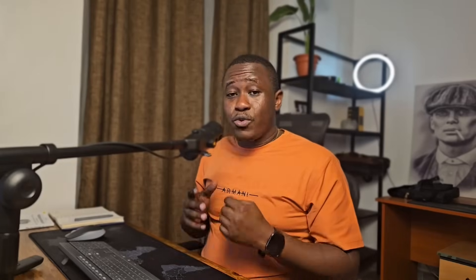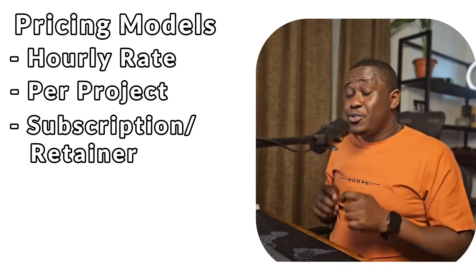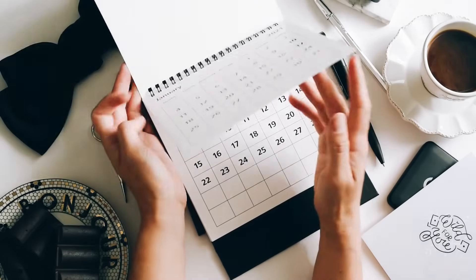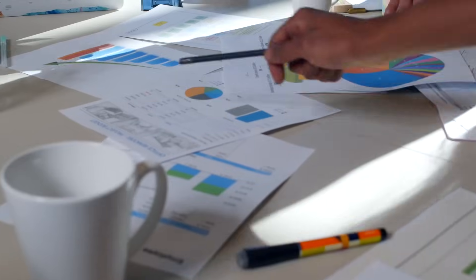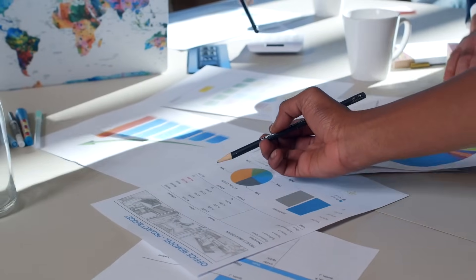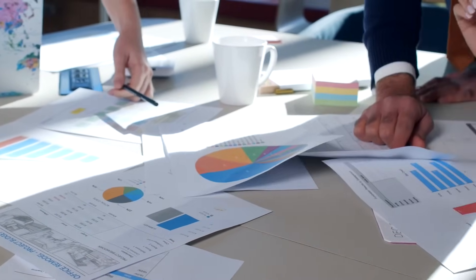The third model is the subscription or retainer model. This is usually tricky, more so depending on where you are in the world, because the opportunity environment matters a lot. The retainer or subscription option is perfect for projects that are ongoing — meaning recurring projects that do not have a specific end period. For example, if an entity wants a certain project done on a monthly basis or a specific recurring period, you can have a retainer where you receive a fixed monthly amount for that project.